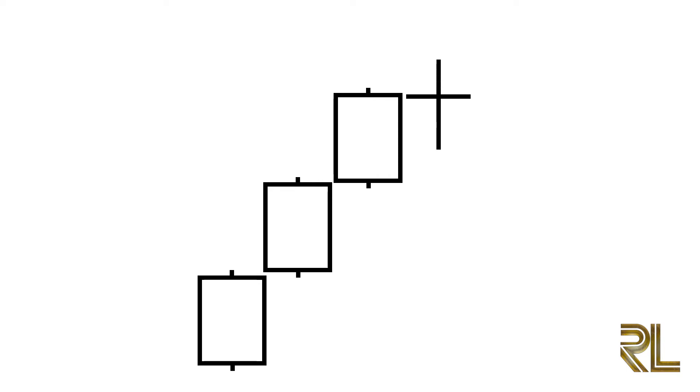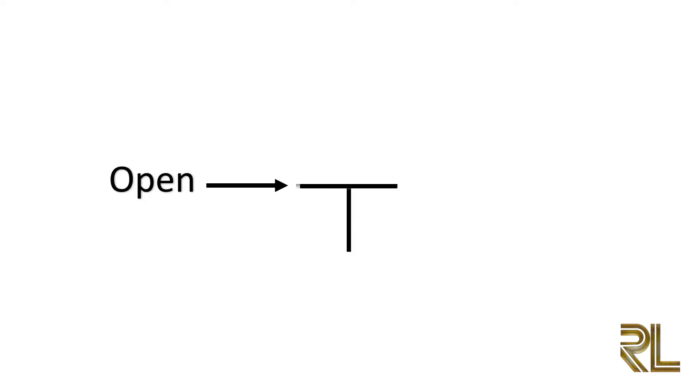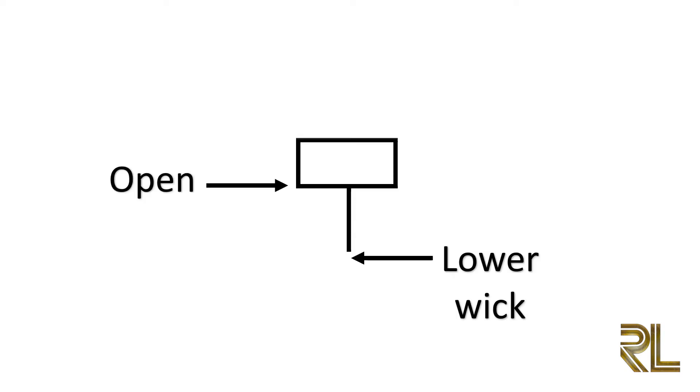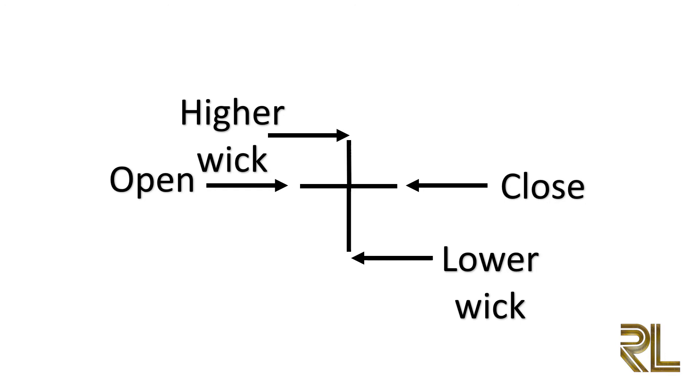The doji is found in an uptrend or downtrend and looks like a cross. The psychology: the bears pull price all the way down, then the bulls push price all the way past the opening price, then the bears pull it back to the same price where it opened — leaving two long wicks on both sides. A doji indicates equality and indecision. You will often find it during resting periods after big moves, and when found at the top or bottom of a trend it signals that the prior trend is losing strength.